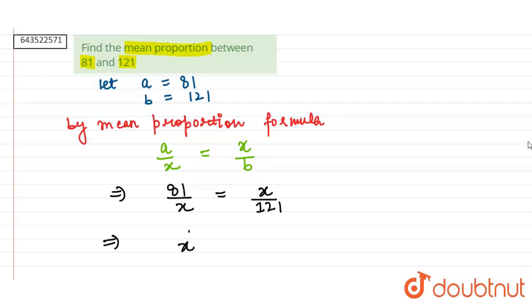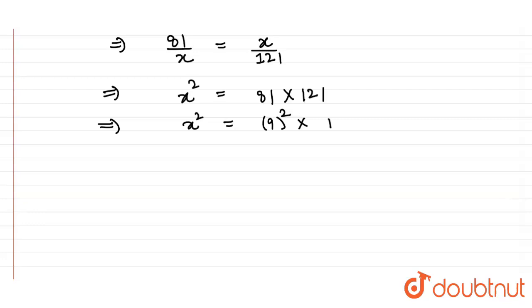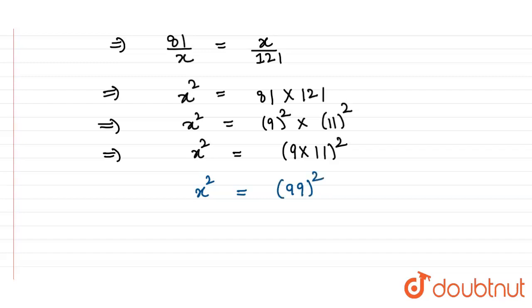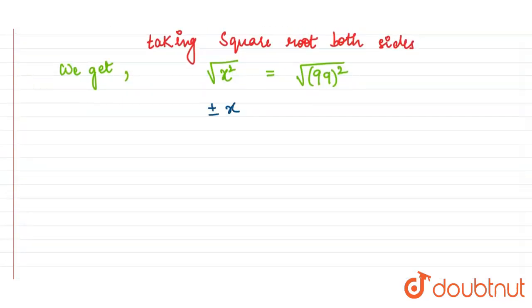This implies x squared is equal to 81 into 121. Now, 81 can be written as 9 squared and 121 can be written as 11 squared. So this becomes x squared is equal to (9 into 11) whole squared, which gives x squared equals 99 squared. Taking square root on both sides, we get square root of x squared is equal to square root of 99 squared, implying plus or minus x is equal to plus or minus 99.